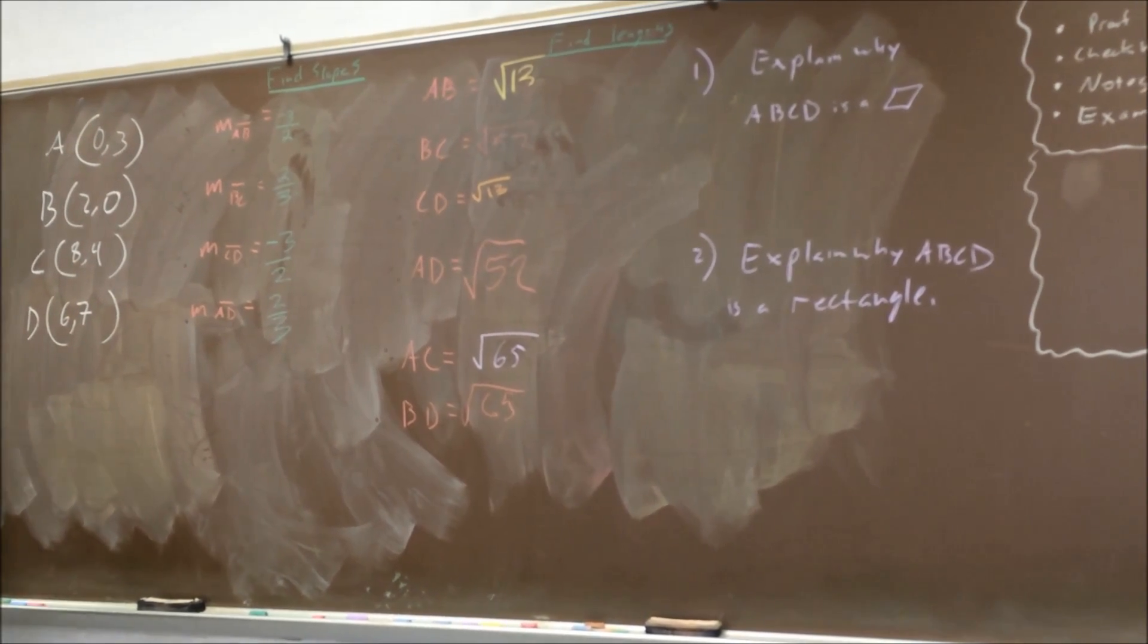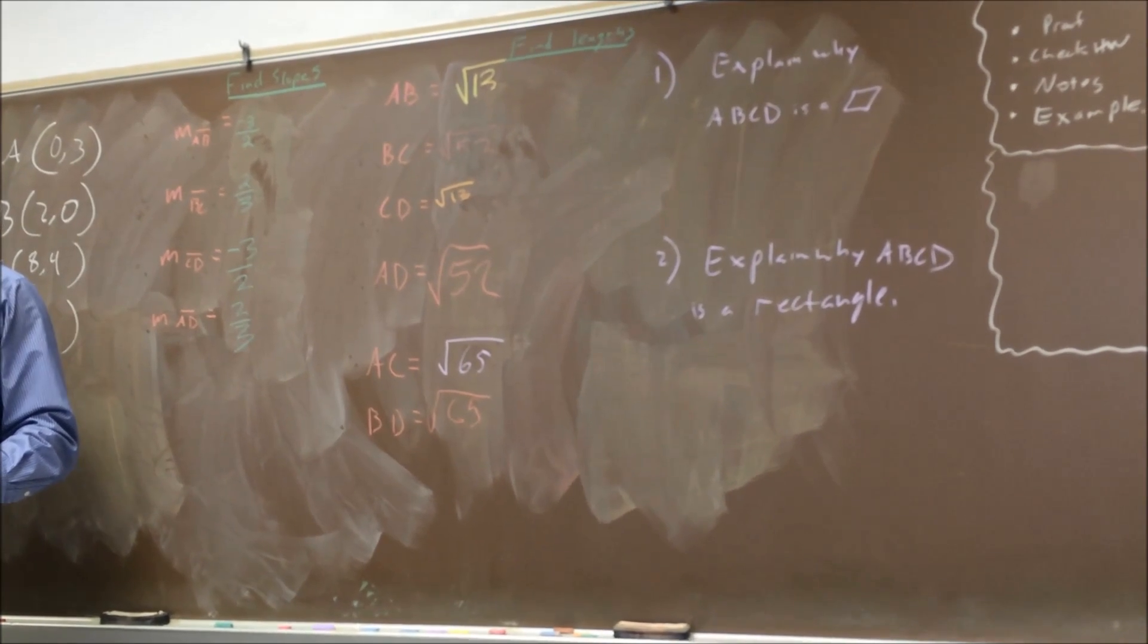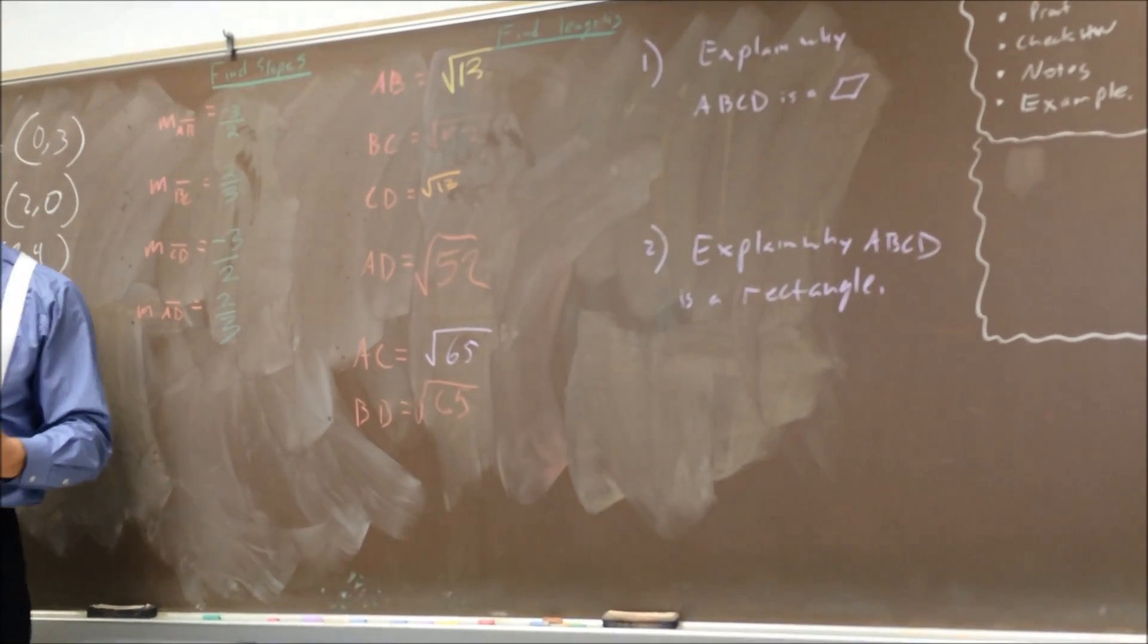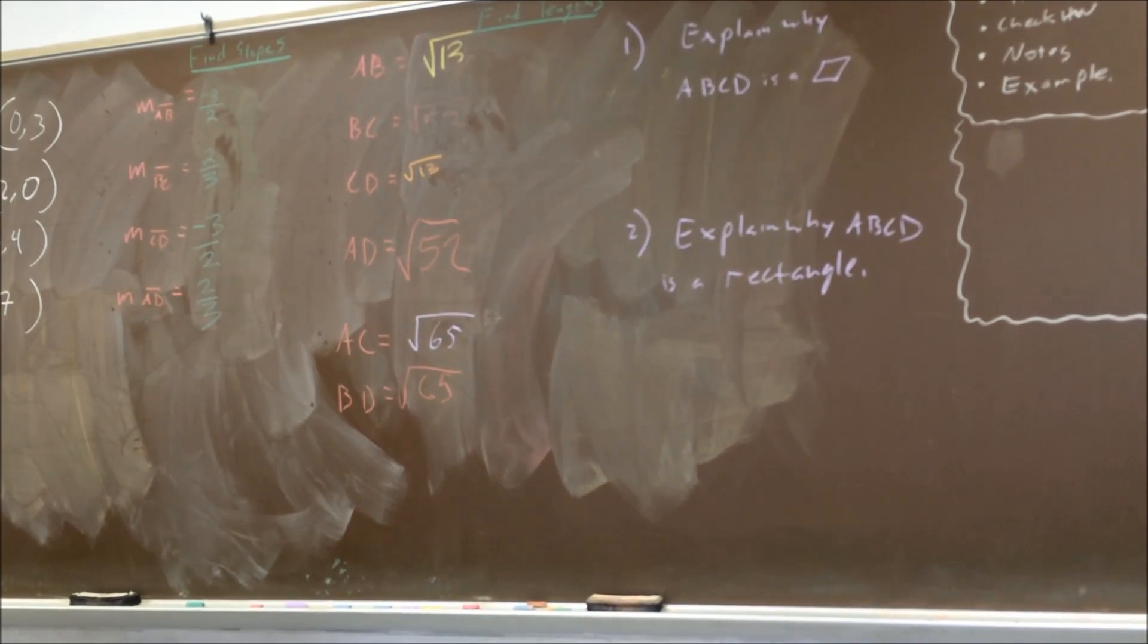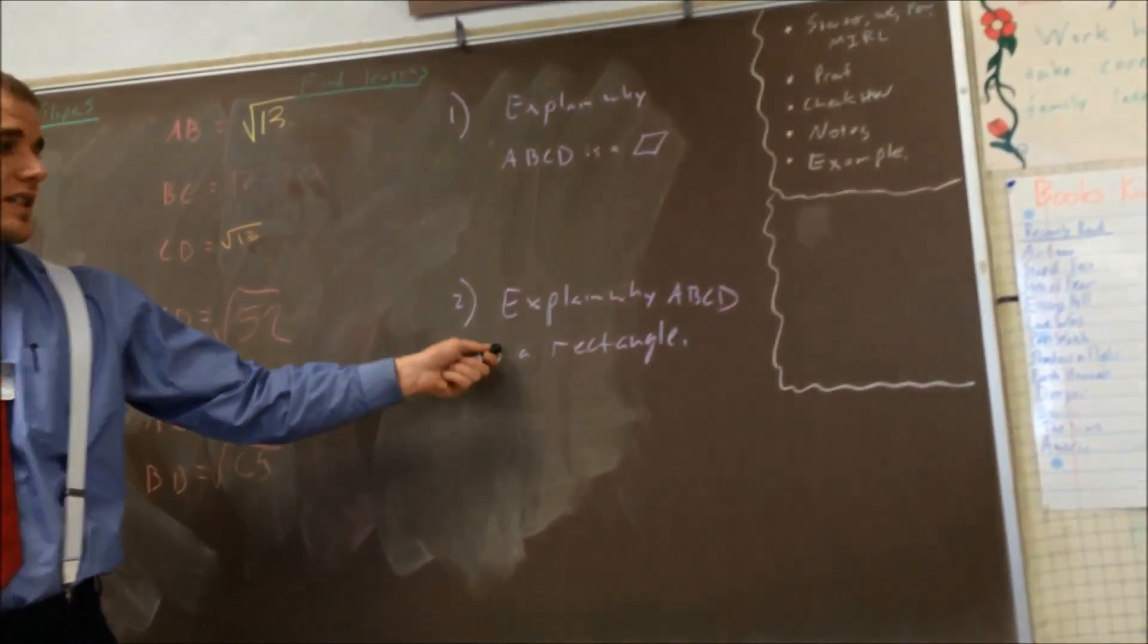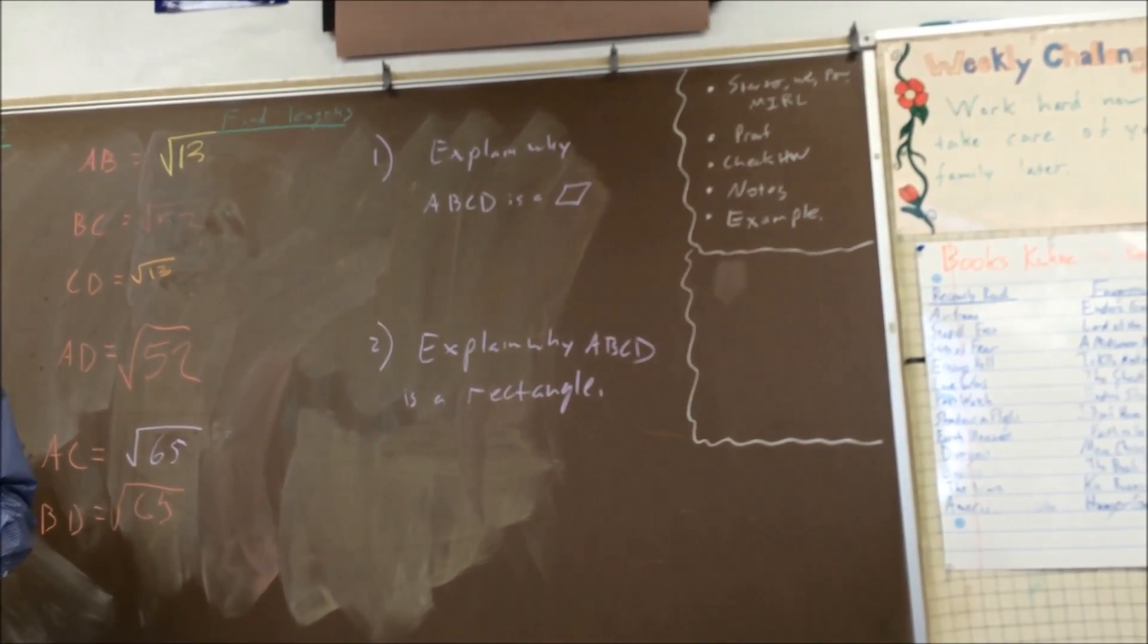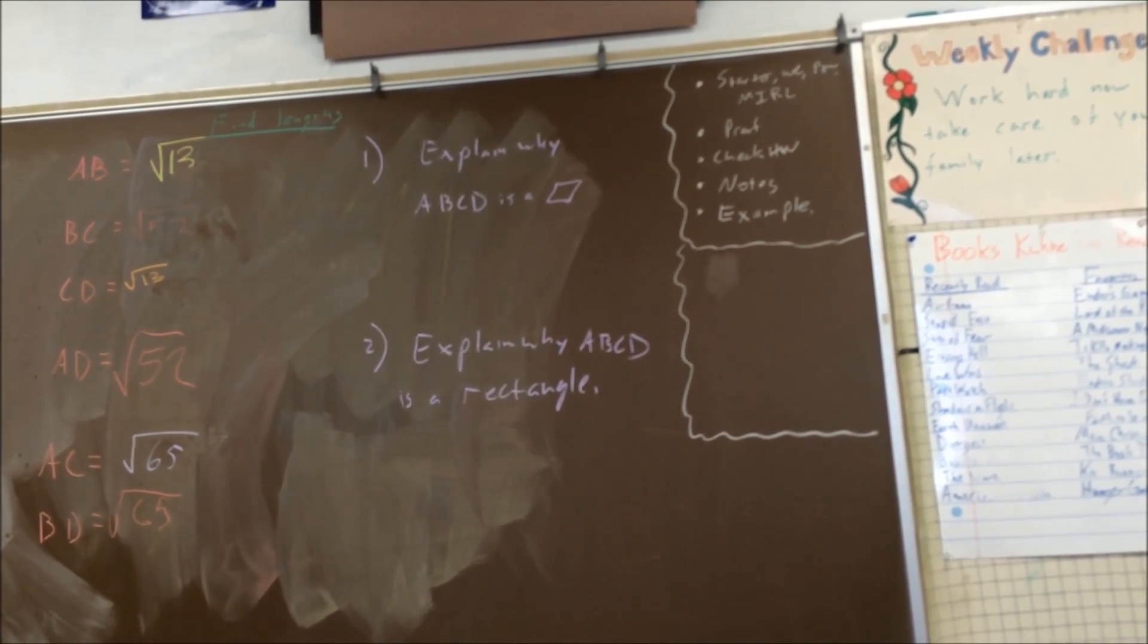Also, let's look at the diagonals. What do you know about the diagonals? They're the same, aren't they? If it's a parallelogram and the diagonals are the same, it's got to be a rectangle. So make sure you write that down in your own words here. Explain why ABCD is a rectangle. Go ahead. I'm going to give you about 30 seconds to write that down and then we're going to start checking the homework.